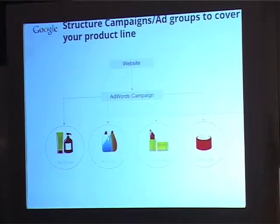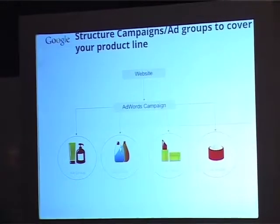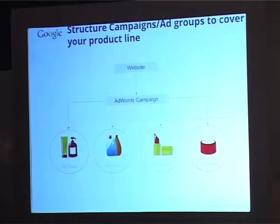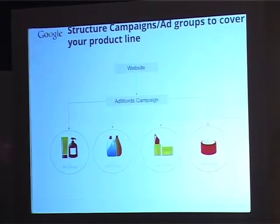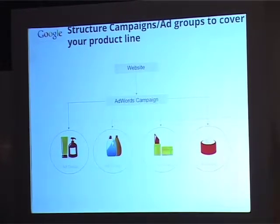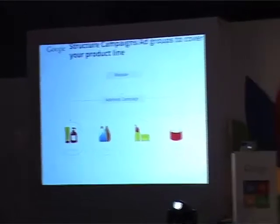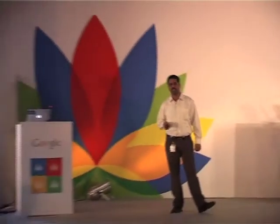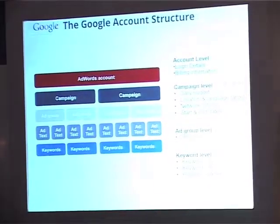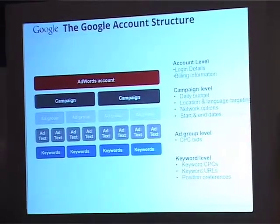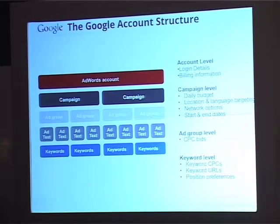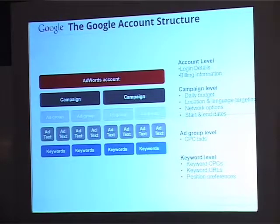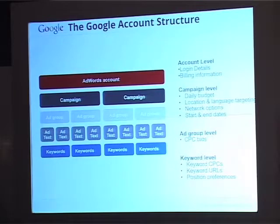You create an AdWords campaign — when doing so, think about your different products. You might be selling training, doing tests, selling flowers, mobiles, or laptops. You can create separate campaigns for each. At campaign level, you can set daily budgets, location and language targeting. You can target only Chennai users — we have city targeting enabled. If you can't ship to Coimbatore, there's no point targeting there, you'd be wasting money. So you can target by language, region, and control the audience you want to serve.